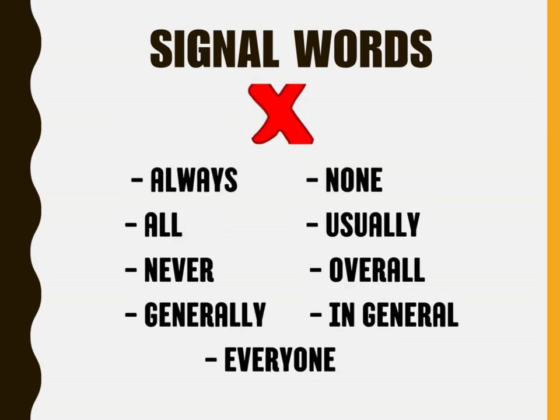On the other hand, generalizations are invalid or not true when they use the following signal words: always, none, all, usually, never, overall, generally, in general, everyone.